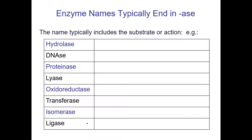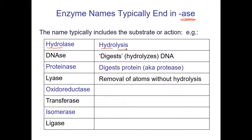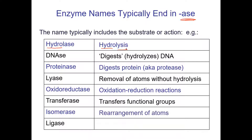Enzymes usually end in '-ase,' and there's usually a clue in the name about what they're doing. Hydrolase has 'hydro' — something to do with water, involved in hydrolysis. DNAase has something to do with DNA. Many times the substrate is right in the name: lipidase digests lipids, protease digests proteins. Oxidoreductases are involved in oxidation-reduction reactions. We will talk about ligases when we discuss DNA replication — a good one to know eventually.